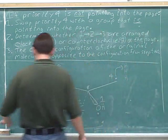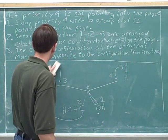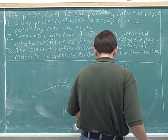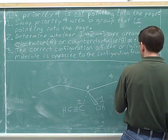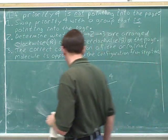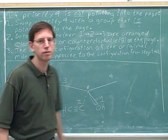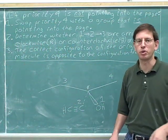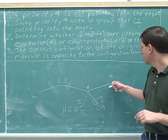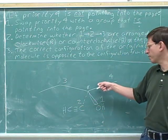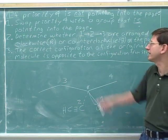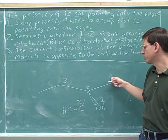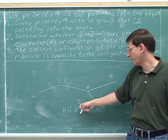Now we'll erase our work. Before going any further, we have to look to see where the number four priority is — is it pointing into the page or not? Well, here's the number four priority. It's pointing in the plane of the page, which means it is not pointing into the page. So we have to use this three-step method. We have to swap the number four with the group that is pointing into the page, which happens to be the number two.